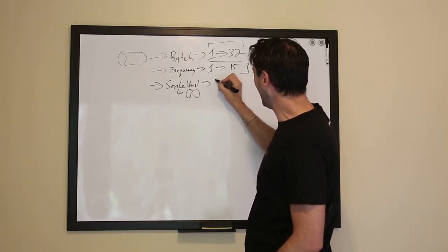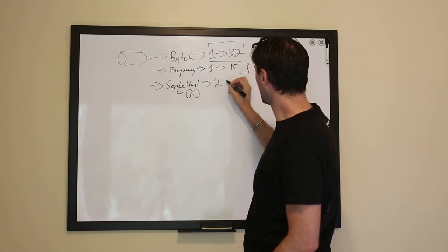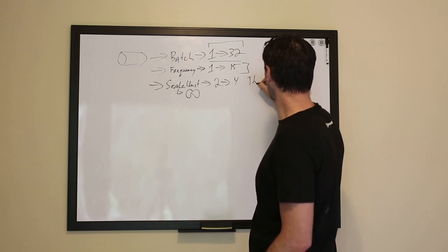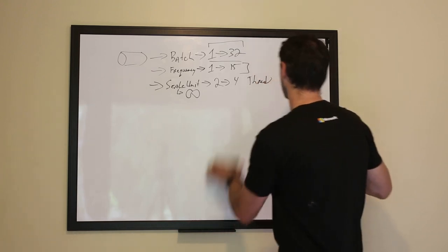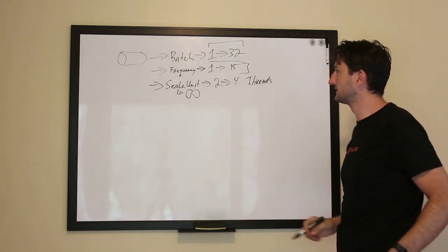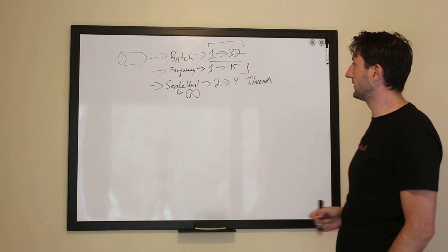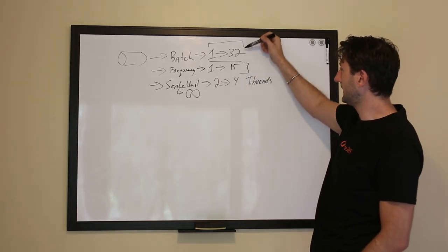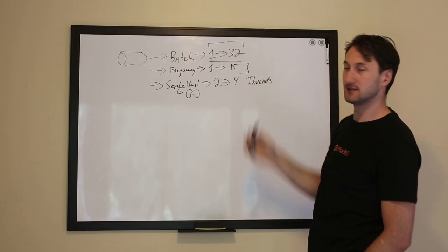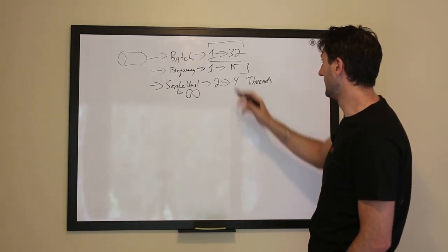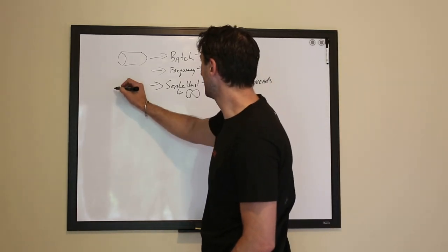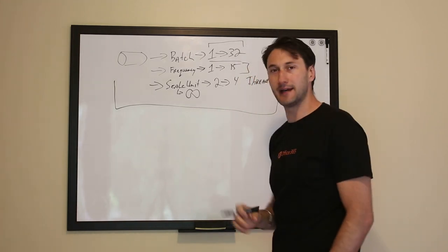Now on a high priority, you could have two to four threads per server running. So now you can see how dynamic this is. You could have on the high end a server batching 32 messages per second, and it has two dequeuers, two consumers working. So you're getting approximately 64 messages per second per server.